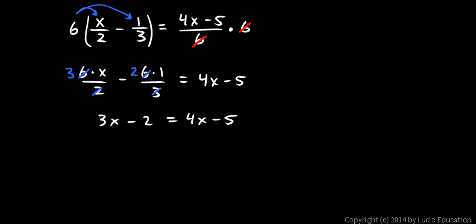Now we need to finish solving this. There is an x on the left side and on the right in the 4x term, so I need to get rid of one of those. I'm trying to isolate x — that means I need to get x by itself in one place. I'm going to subtract 3x from the left, and if I subtract 3x from the left, I have to subtract 3x from the right. The 3x and the minus 3x cancel, leaving me with minus 2 on the left. On the right, 4x minus 3x leaves me with x, and I still have the minus 5.